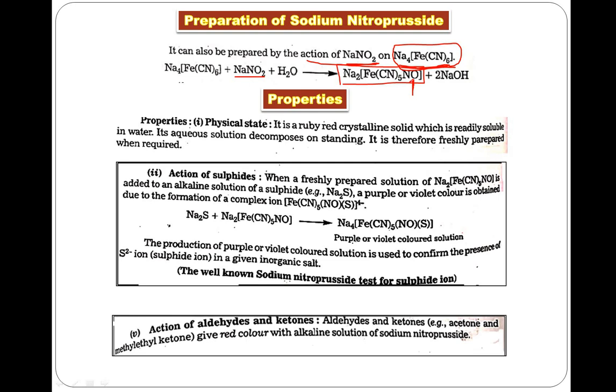Now let's look at the important properties. Regarding physical state, it is a ruby red crystalline solid which is readily soluble in water. However, the solution starts decomposing after standing for some time. That is why whenever we need to perform any reaction or test with sodium nitroprusside, the solution should be freshly prepared.